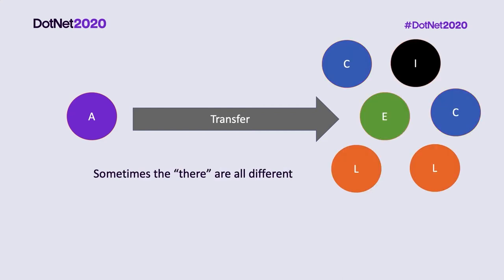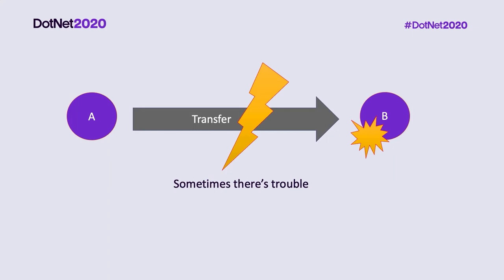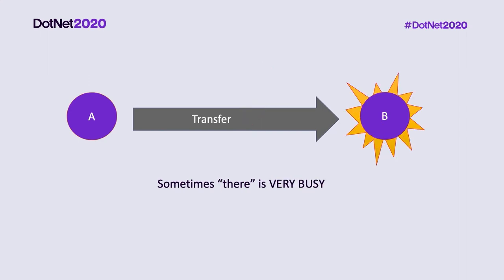Sometimes there are many different services all doing something different with a message — what they care about and what they do is definitely not the same. We also need to think about what happens if I send a message and there's no one on the other side listening. And what about when the underlying transport is unavailable or experiencing problems? Or when the other side is really busy and can't deal with your message right now — maybe I have to wait or send it later.